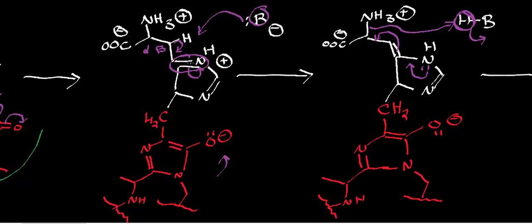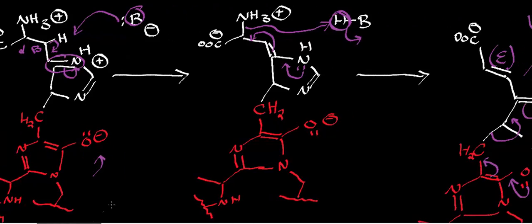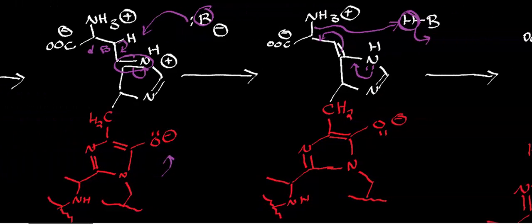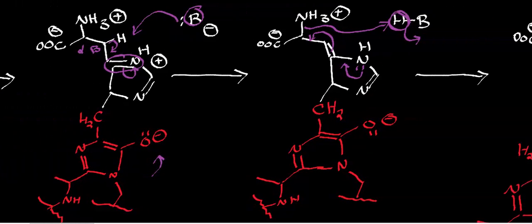Then in the next step, the Schiff base reforms, and that causes elimination. My question to you is this: based on these mechanistic steps we just saw, is this going to be an E1 or an E2?